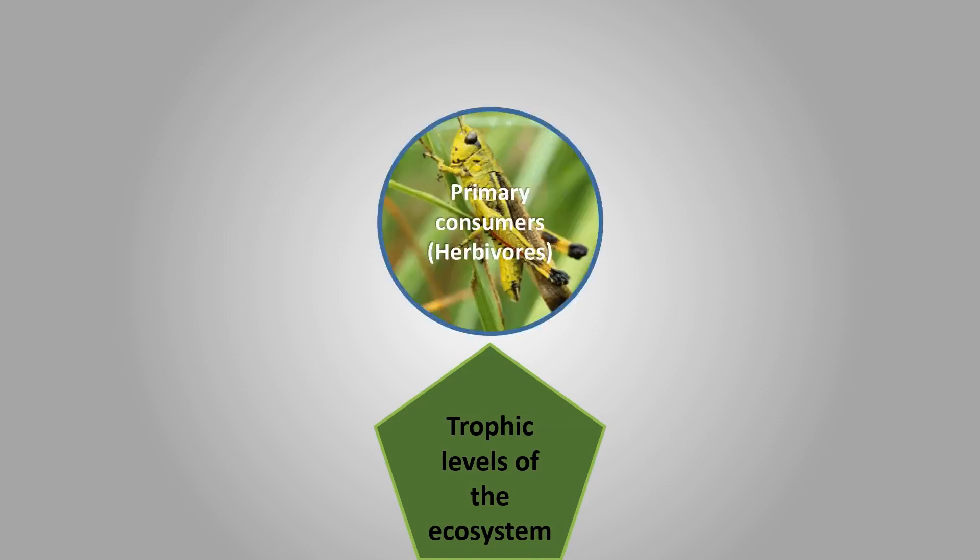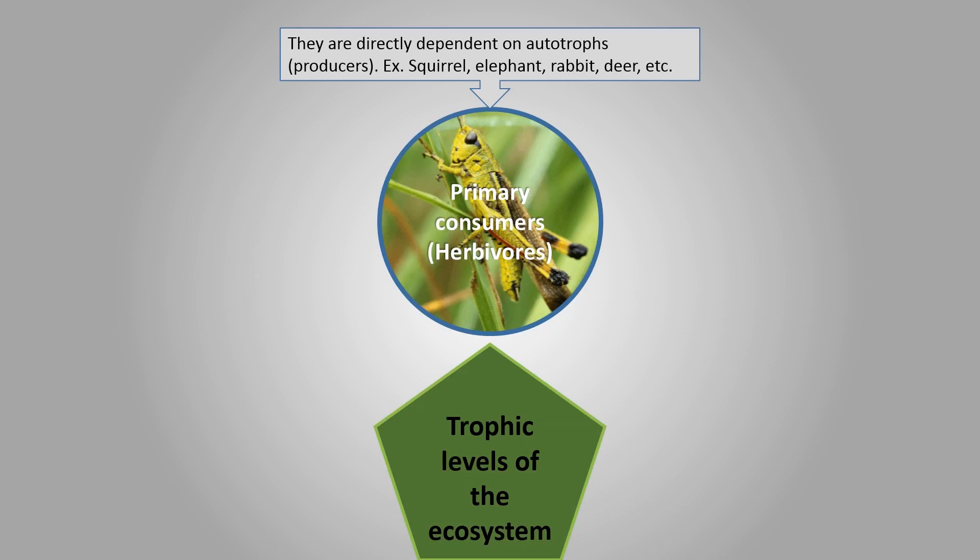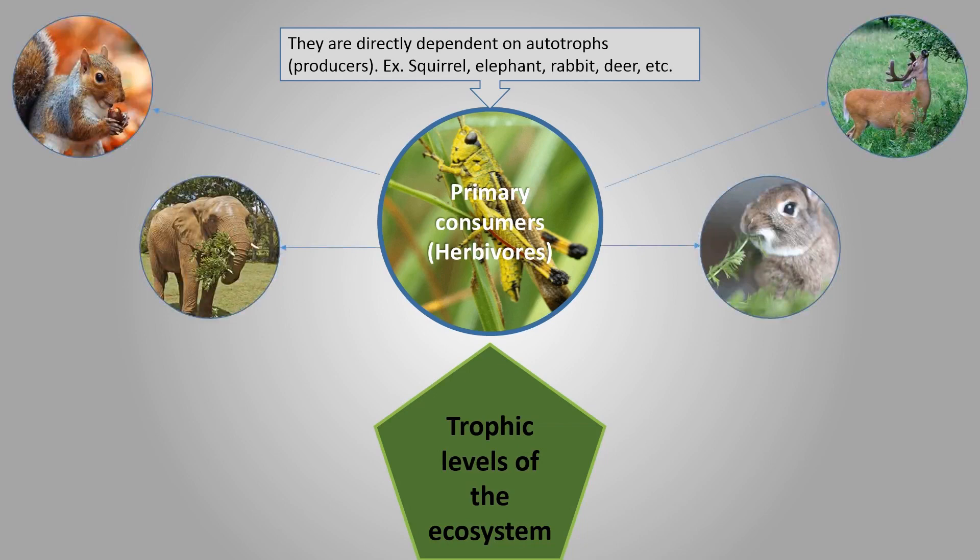Primary consumers, herbivores, they are directly dependent on autotrophs. Examples: squirrel, elephant, rabbit, deer, etc.